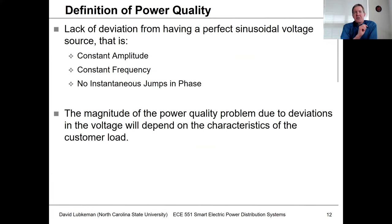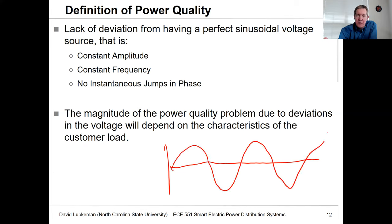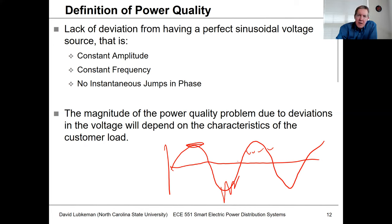The definition of power quality is any deviation from a constant-amplitude, constant-frequency voltage waveform. What the customer expects to see is a nice clean sine wave — constant amplitude, constant frequency, no instantaneous jumps in phase angle. But things can occur that cause the voltage to sag, cause ringing deviations. Any deviation from a pure 50 or 60 Hz waveform is a power quality issue.